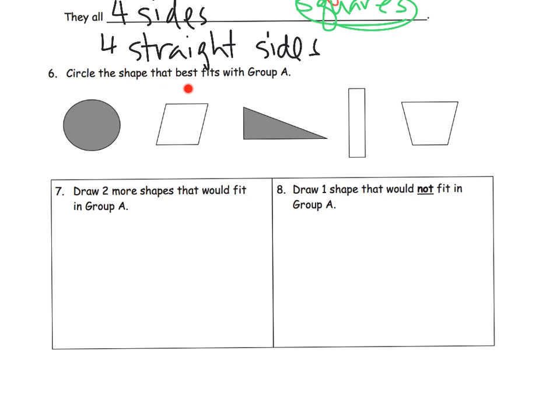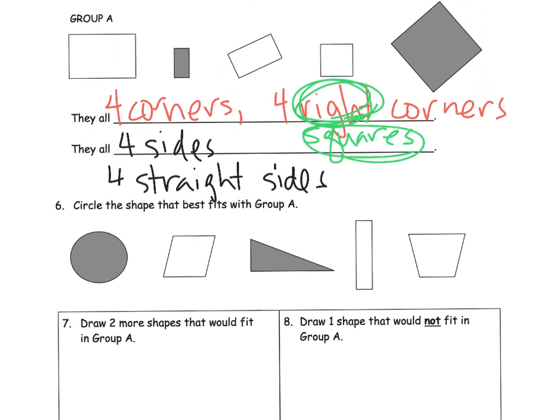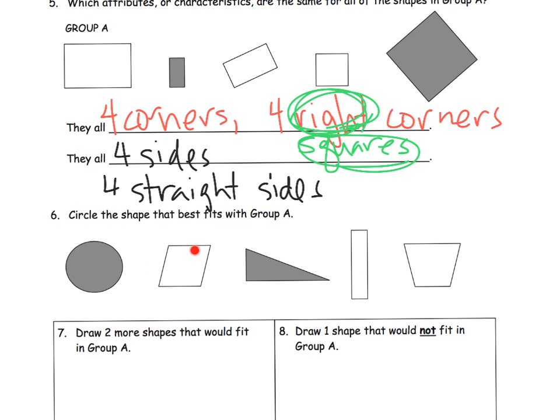For six, circle the shape that best fits with group A. So, we're going to go back up and we're going to look. Well, which one of these guys best fits with group A? And based on these figures right here, well, that one's pretty close because it's four straight sides and it's got four corners. But are they four square corners? No. So, really, based on that, it tells us that this rectangle is probably the shape that best fits with group A.